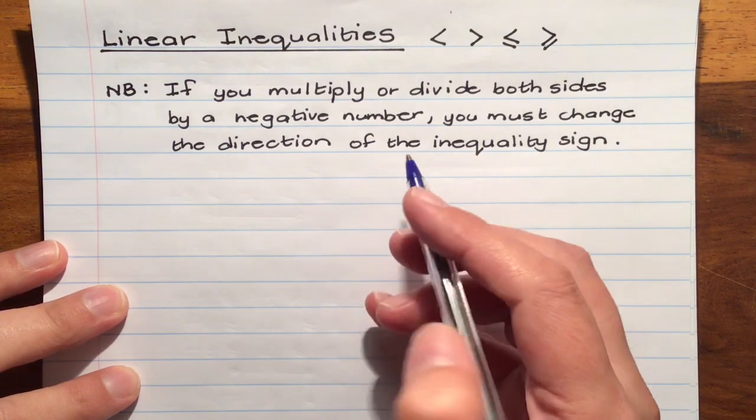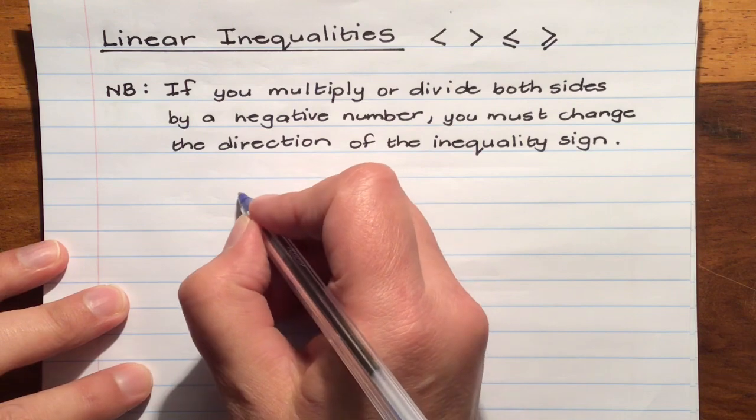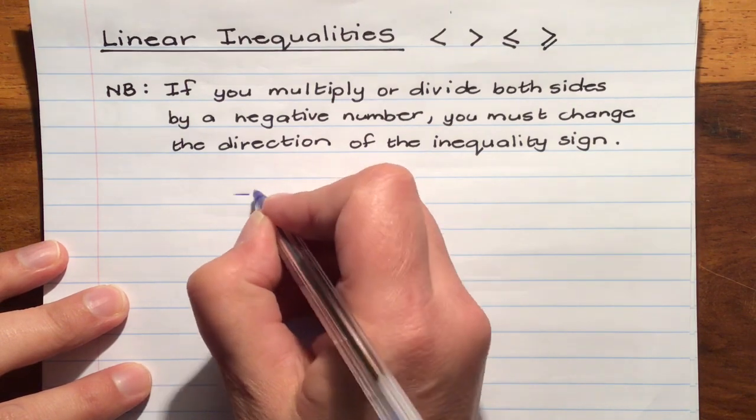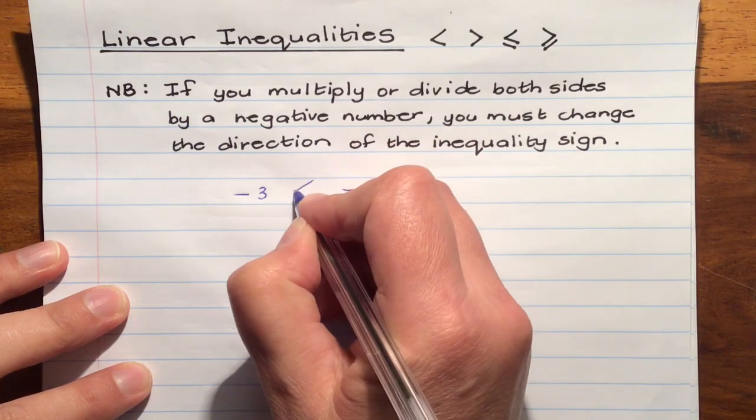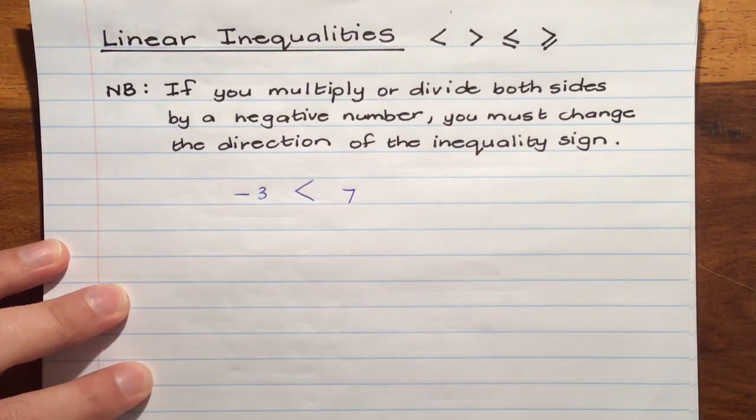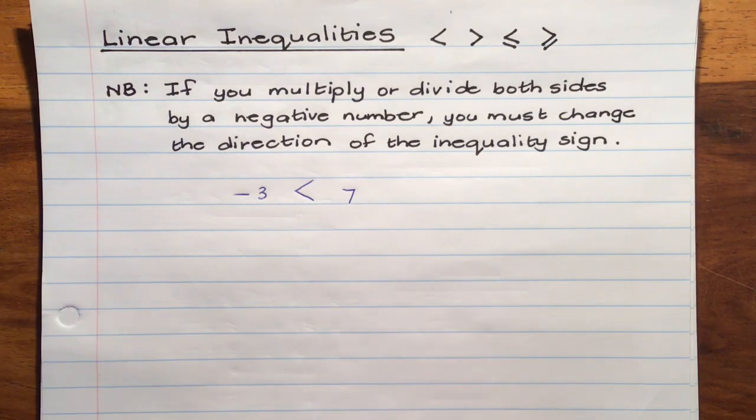Why is this? Let's say we've got negative three and seven. Negative three is less than seven and let's say we were going to divide it by negative one.